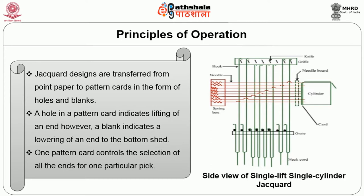Figure 2.1 shows the working components of a single lift, single cylinder jacquard machine — a side view. The different components visible are: the cylinder on the right-hand side, the needle box, the hooks, the knife and the grip bar, and the lingos attached to the bottom.